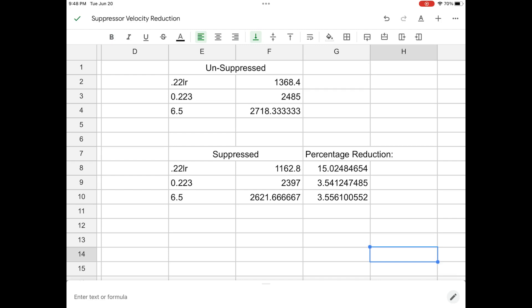Okay, so this is what the data looks like. Here are the unsuppressed velocities: 22 long rifle at about 1,400 feet per second, .223 - these are some of my older .223 loads, so I know they're a bit lower velocity - at about 2,500 feet per second.